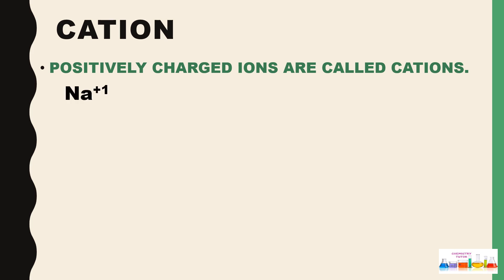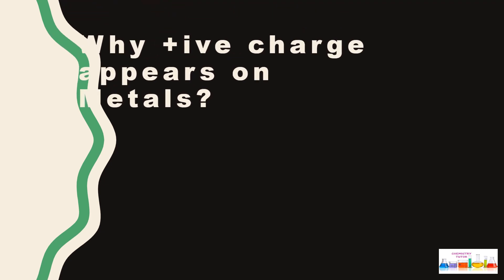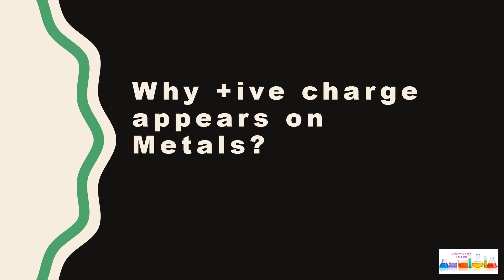ions called cations, like sodium +1, calcium +2, aluminum +3. Now the question is, why does positive charge appear on metals?